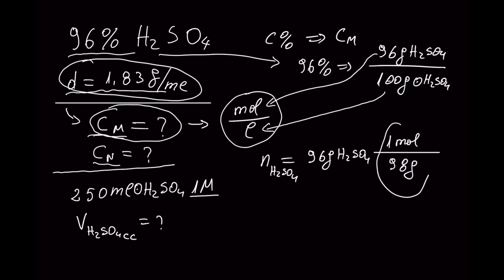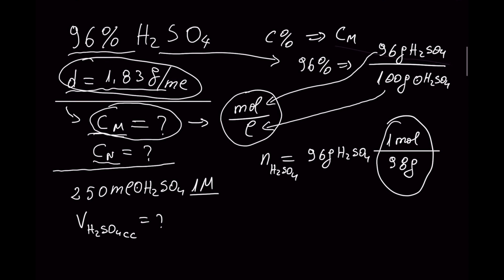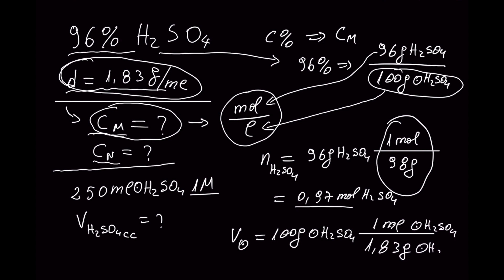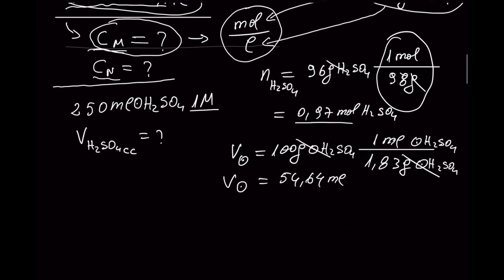Let's convert the first one first. The number of moles of sulfuric acid at 96% concentration uses the molar mass of sulfuric acid from the periodic table. The number of moles is 0.97 mol. Now let's find the volume of the solution — we have 100 grams of solution with a density of 1.83 g/mL.